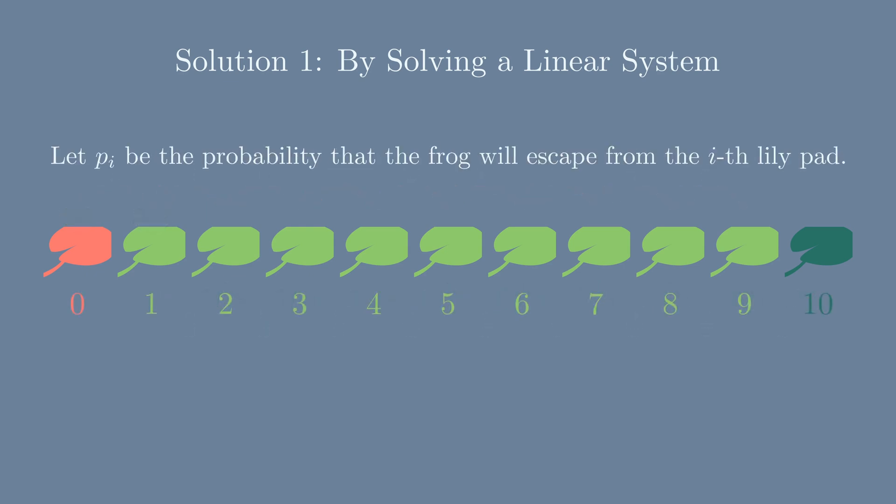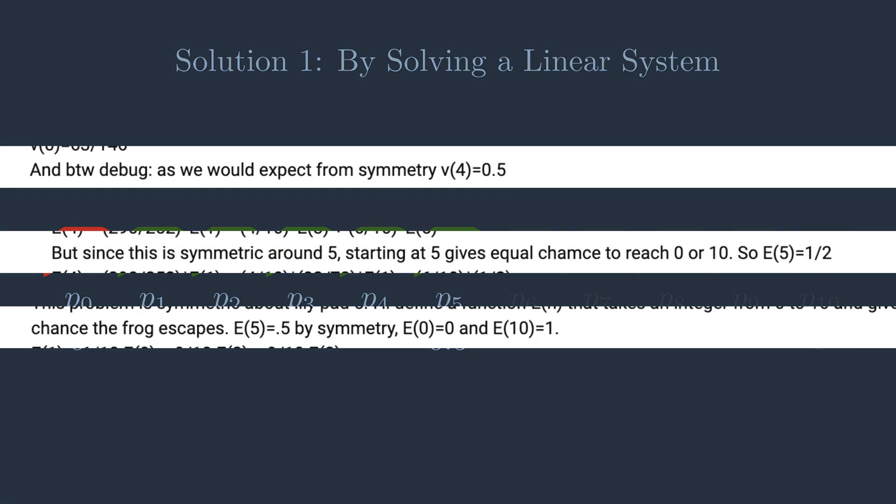Let's define pi as the probability that the frog will escape from lily pad number i. Therefore p0 is 0 because you are already eaten, while p10 is 1 because you already escaped, and by symmetry we identify that p5 is 0.5.